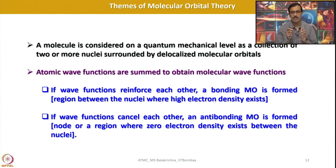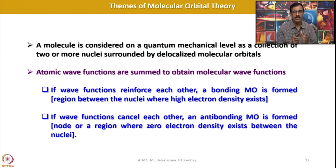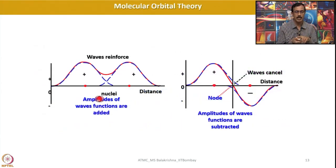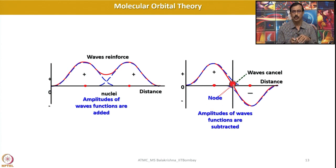Atomic wave functions are summed to obtain molecular wave functions. If wave functions reinforce each other, a bonding molecular orbital is generated — it is the region between the nuclei where high electron density exists. On the other hand, if wave functions cancel each other, an antibonding molecular orbital is formed — that means a node, or a region of zero electron density between the nuclei. You can see the electron density resides between the nuclei when the waves are reinforced; when the amplitude of waves is subtracted, a node appears between the two nuclei — this is called antibonding, and the other is called bonding.